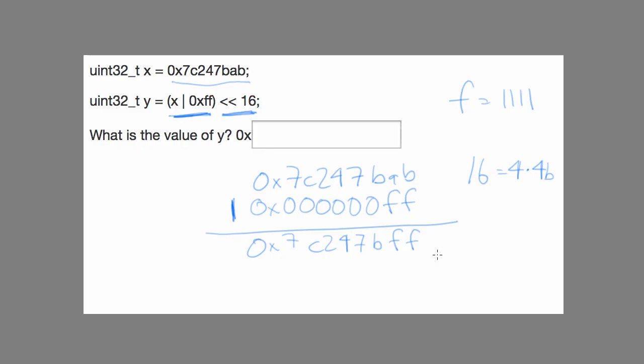Basically these top four hexadecimal characters are going to get shifted off into nowhere land, so those are going to disappear. These bottom 16 bits, these four characters, are going to become our new top 16 bits.